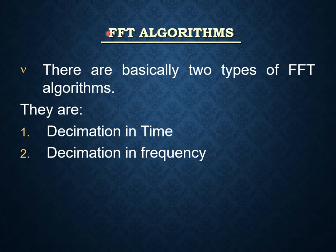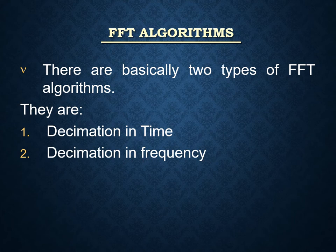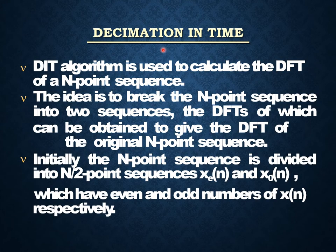FFT algorithms are classified into two types: decimation in time (DIT) and decimation in frequency (DIF). In DFT, smaller n represents the time domain and k represents the frequency domain. If n is getting decimated, we call it decimation in time. If k is getting decimated, we call that algorithm decimation in frequency.